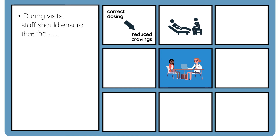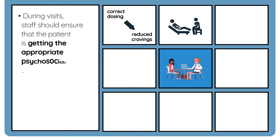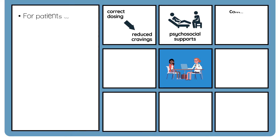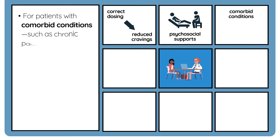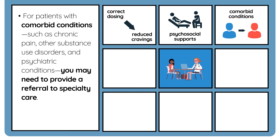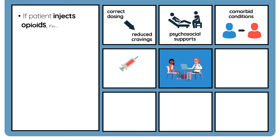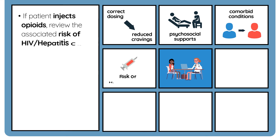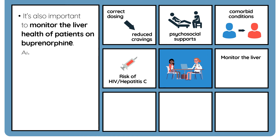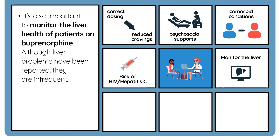During visits, staff should ensure that the patient is getting appropriate psychosocial supports for recovery. For patients with comorbid conditions such as chronic pain, other substance use disorders, and psychiatric conditions, you may need to provide a referral to specialty care. If a patient injects opioids, review the associated risk of HIV and hepatitis C and the need for testing. It's also important to monitor the liver health of patients on buprenorphine, although liver problems have been reported, they are infrequent.